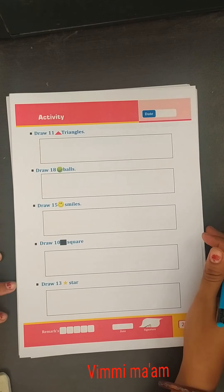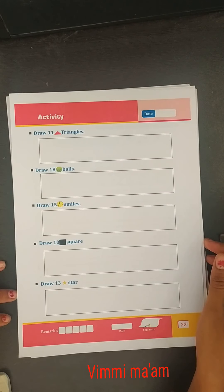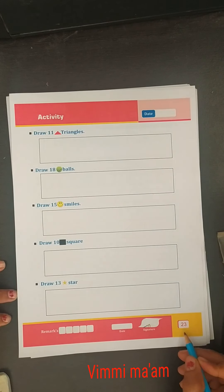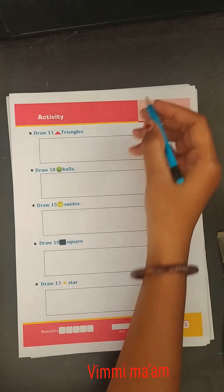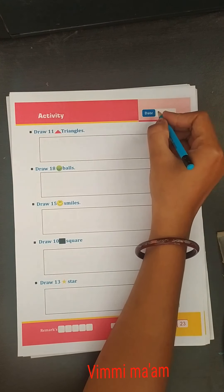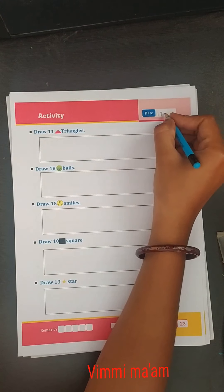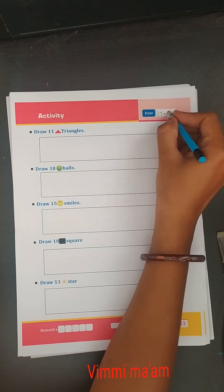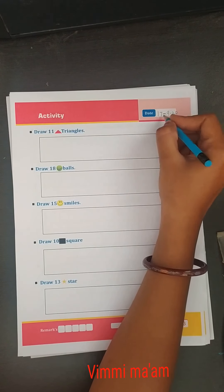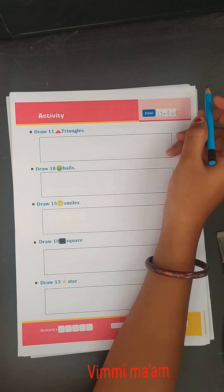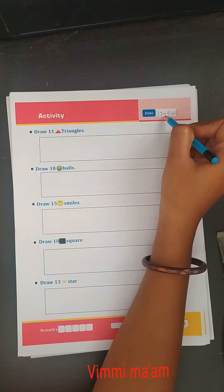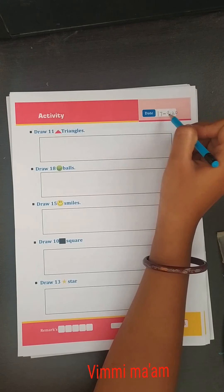Children, take your maths textbook and open page number 23. Today's date is 17th September 2020. Now we will write the date here.